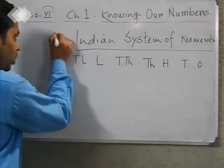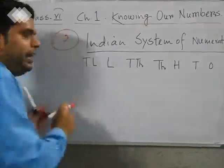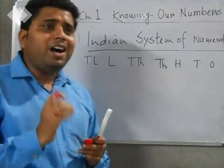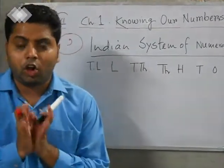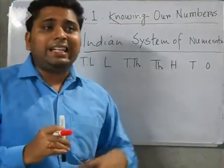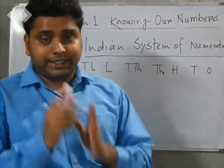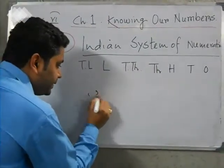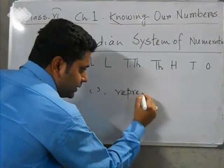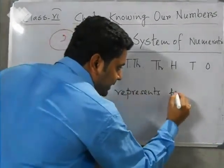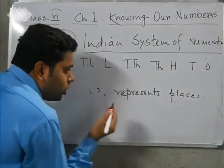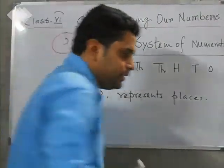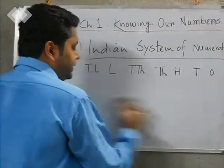Now we have to use comma. Comma is very important in the system of numeration. Comma represents the places, and it sits family-wise. Two important things: comma represents place, and comma sits family-wise.